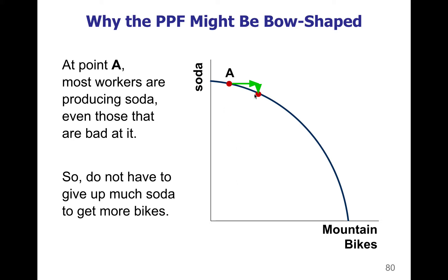When we move from point A to our second point, we're giving up a vertical amount of soda to gain a horizontal amount of mountain bikes. So the opportunity cost of making more mountain bikes is what we're giving up, which is a small amount of soda. At the top of the curve where the curve is closer to horizontal, our opportunity cost is small.